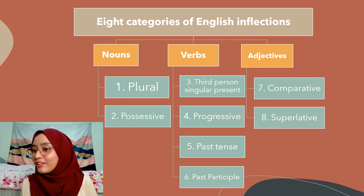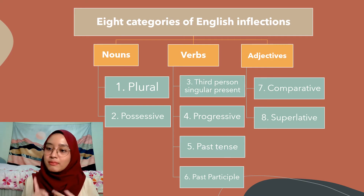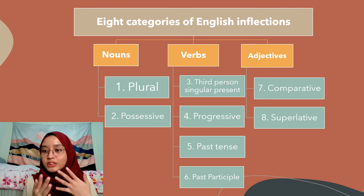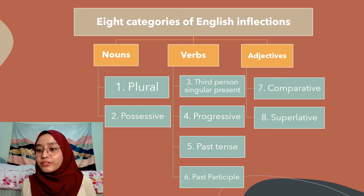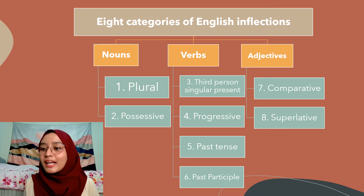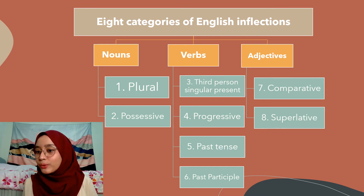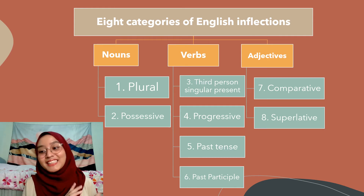So what are the eight inflections? Don't get confused by the diagram here — I just want to show you that they are classified under three main grammatical categories: noun, verb, and adjective, with the inflections coming under each category. As we go through all the examples, you'll see that we are very familiar with all eight of these English inflections because we use them in our daily life, especially as English major students.